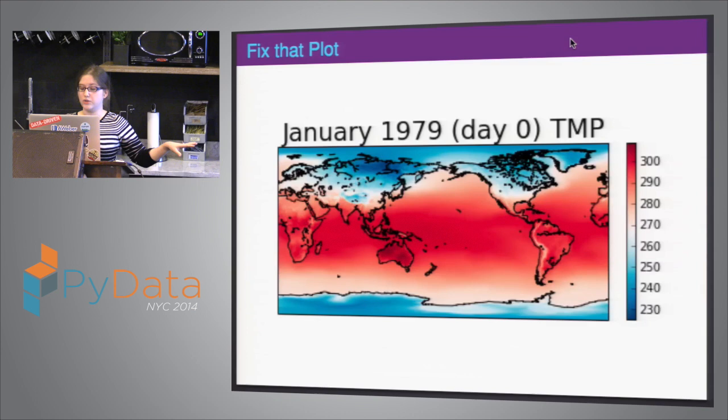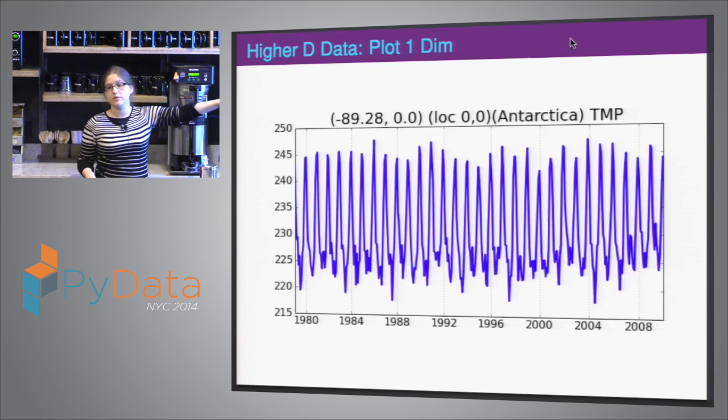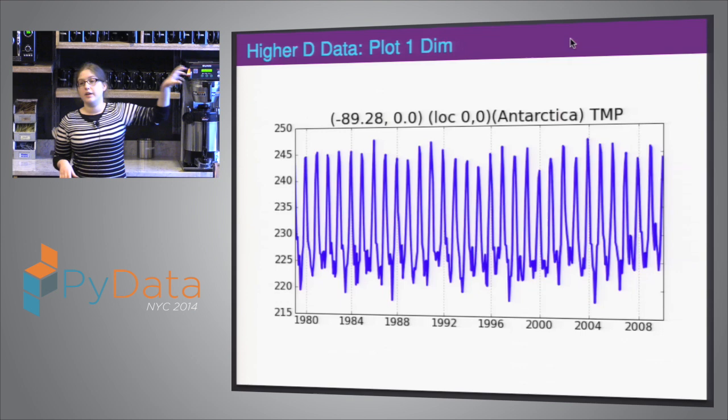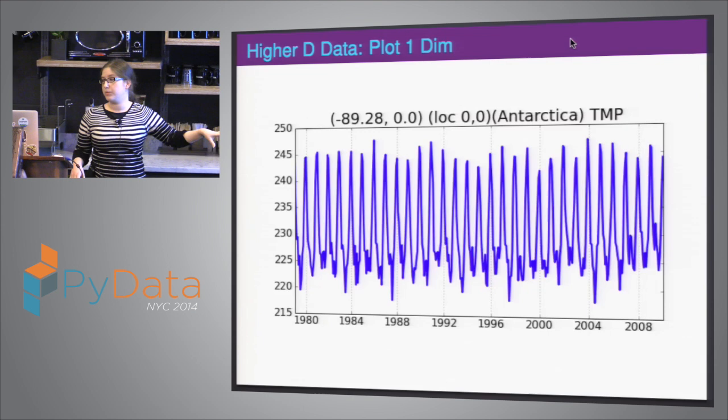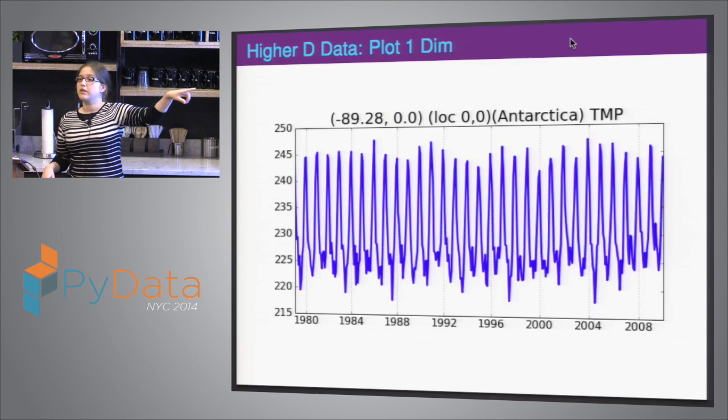We're doing this because we want to see the seasonal patterns. It's the same logic: Antarctica is the opposite of us — they're hottest in January, coldest in our summer. If we're not seeing that seasonal pattern in our snapshot, we haven't aligned our grids correctly.